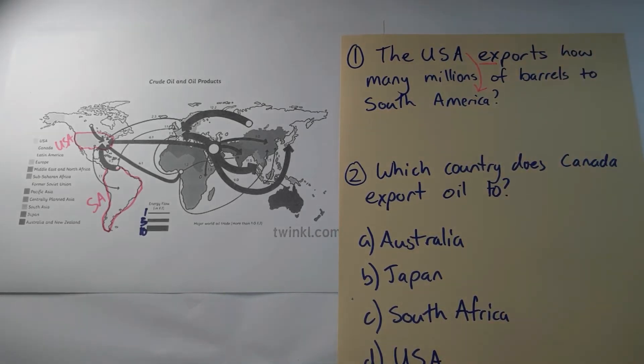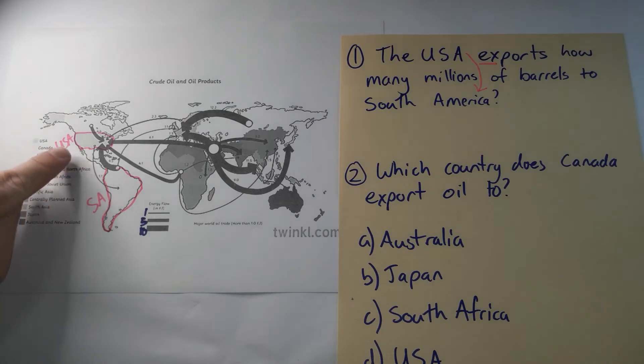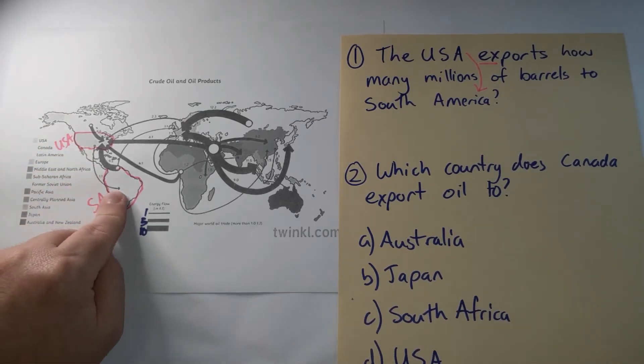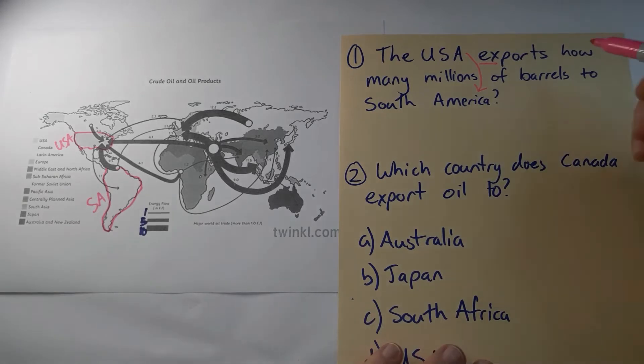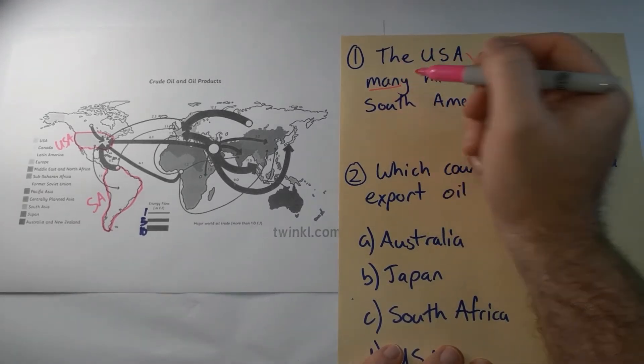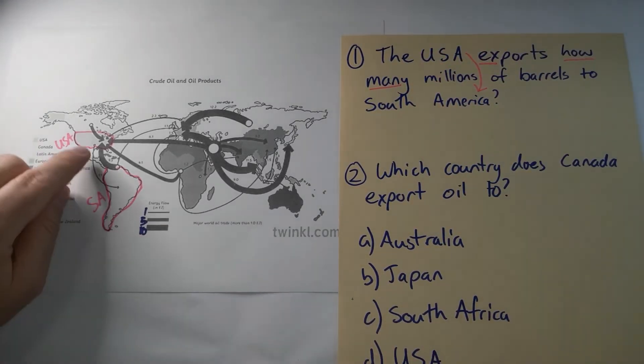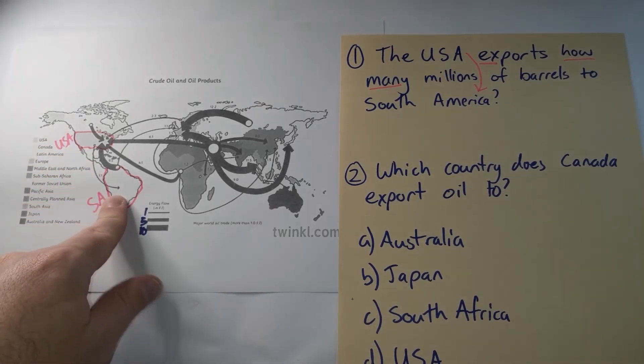We should first of all look for this arrow, so it starts in the USA and goes down to South America. But we want to know how many. We've got the arrow, we found it's the only one that's leaving the USA and going to South America.